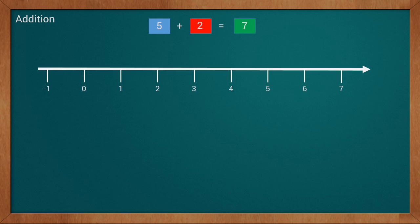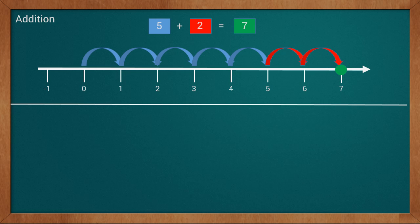Our first value is 5, so we will find 5 on the number line: 1, 2, 3, 4, and 5. Now we have to add or plus 2 to it. For addition, we will move in the forward direction or in the right direction. From 5, we draw 2 points more: 1, 2. We reached 7. This way we got 5 plus 2 equals 7. For addition, we always move in the right direction or in the forward direction.